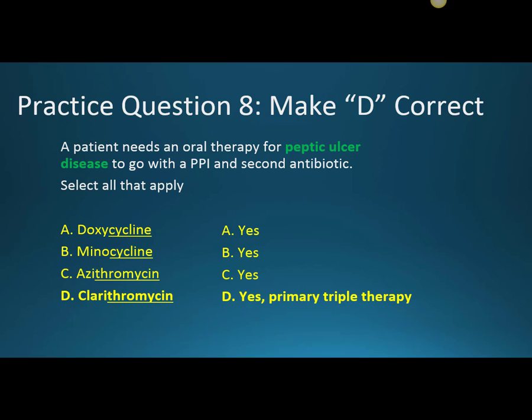Question eight: a patient needs oral therapy for peptic ulcer disease to go with a PPI and a second antibiotic — typically triple therapy, sometimes quad therapy. All four drugs have been studied for this, but the one most likely to appear on an exam is clarithromycin because it's the staple of triple therapy. There has been some recent resistance to clarithromycin, but it still appears in the most current literature.